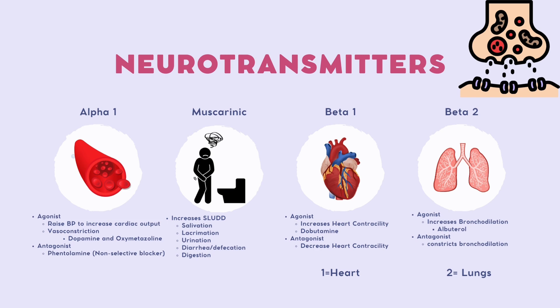For beta-1: if an agonist acts upon it, it increases heart contractility — an example is dobutamine. An antagonist will decrease heart contractility. For beta-2: an agonist increases bronchodilation — an example is albuterol — while an antagonist will constrict the bronchioles.